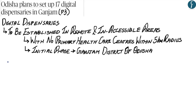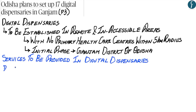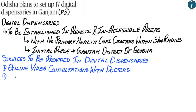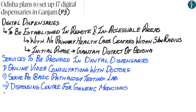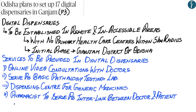The four main services provided by digital dispensaries are: first, online video consultations with doctors; second, they serve as a basic pathology lab; third, they serve as a dispensing center for generic medicines; and fourth, the pharmacist acts as an interlink between the doctor and the patient, relaying reports from patient to doctor and delivering prescribed medicines back to patients.